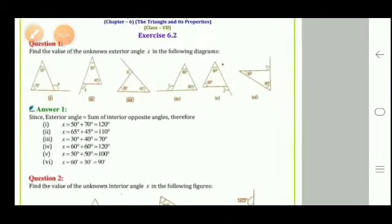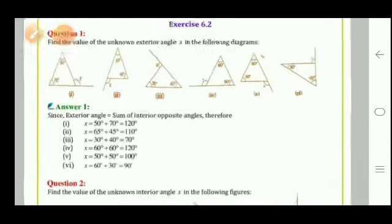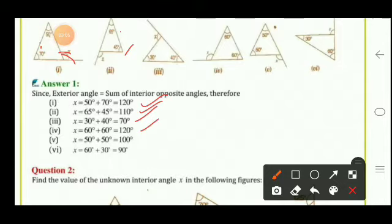Exercise 6.2, question 1: find the value of the unknown exterior angle x. Using the exterior angle property — the exterior angle equals the sum of the two opposite interior angles — we get: x = 50° + 70° = 120°; x = 45° + 65° = 110°; x = 30° + 40° = 70°; x = 60° + 60° = 120°; x = 50° + 50° = 100°; x = 60° + 30° = 90°.